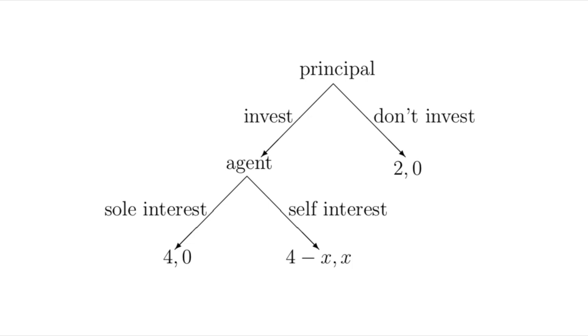Your paper describes the loyalty game. What is that game? The loyalty game is actually a quite familiar game — it's really the trust game that everyone knows. Imagine a party called the principal possessing assets which may double in value if placed under the management of a second party called the agent. Assume the agent acts either in the sole interest of the principal — that is, she acts loyally — or acts in her own self-interest, that is, disloyally. When the agent acts loyally, the principal gets the entire return on invested assets, while disloyalty lowers the principal's return by some amount called x, which is appropriated by the agent. The principal's initial asset value is 2, which could double to 4 under the agent's management.